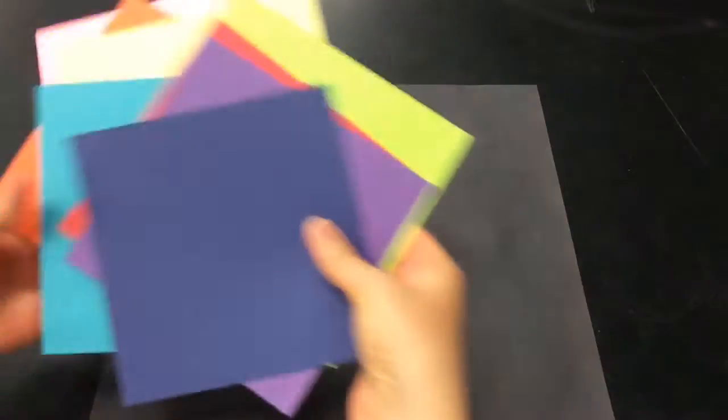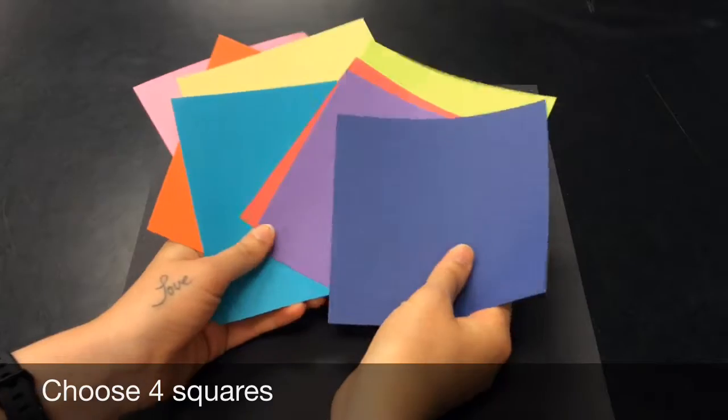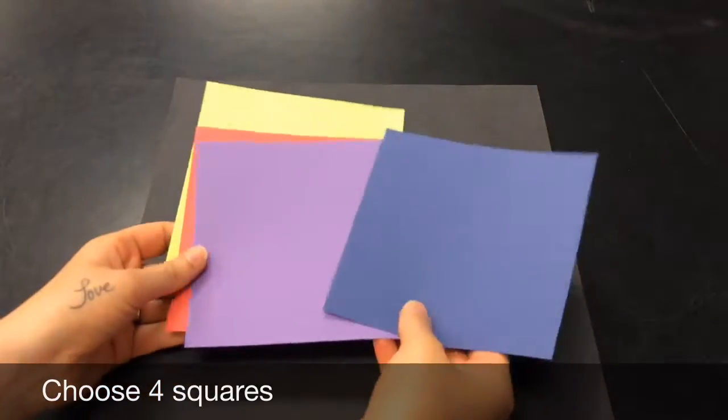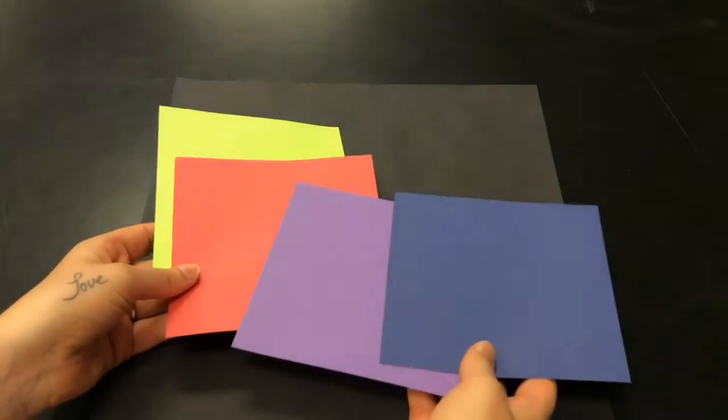The next thing you want to do is you are going to choose four squares of whatever colors you would like. So I'm going to start with blue, purple, red, and green.